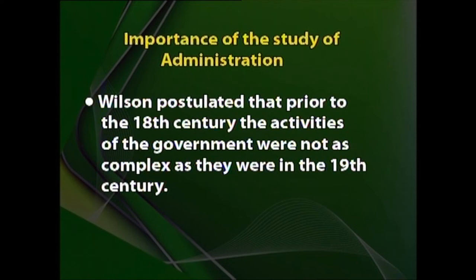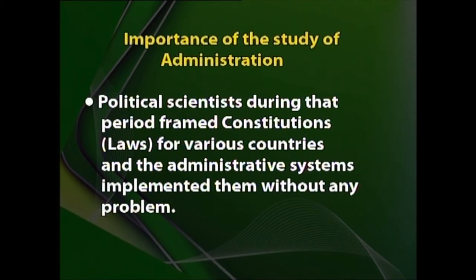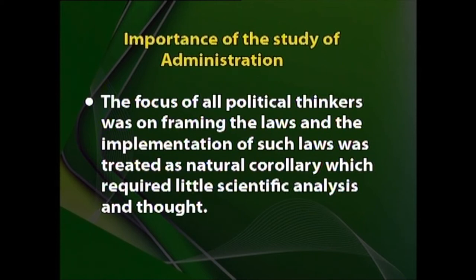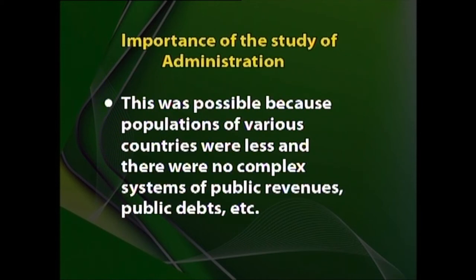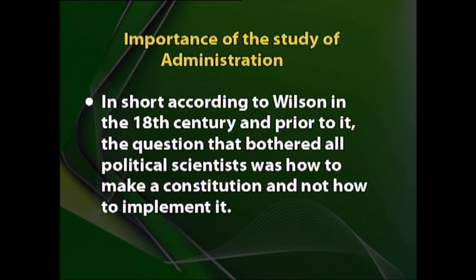Wilson postulated that prior to the 18th century, the activities of government were not as complex as they were in the 19th century. Political scientists during that period framed constitutions — laws — for various countries, and the administrative systems implemented them without any problem. The focus of all political thinkers was on framing the laws, and implementation was treated as a natural corollary requiring little scientific analysis. Once a law was made, administration could force it on people without much resistance, as populations were less and there were no complex systems of public revenues or public debts. In short, in the 18th century, the question that bothered political scientists was how to make a constitution, not how to implement it.